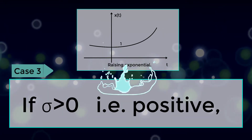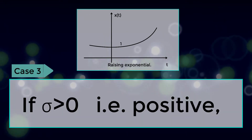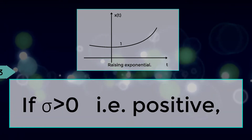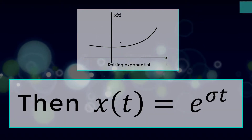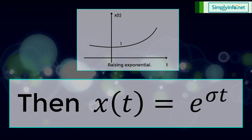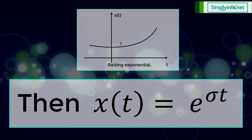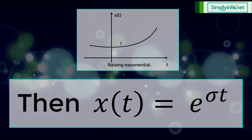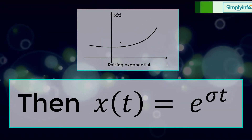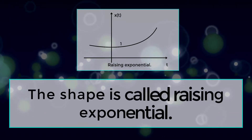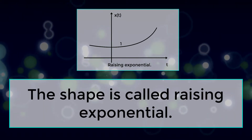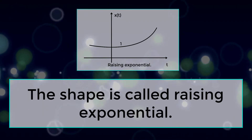If sigma is greater than 0, then x(t) = e^(σt). The shape is called a rising exponential.